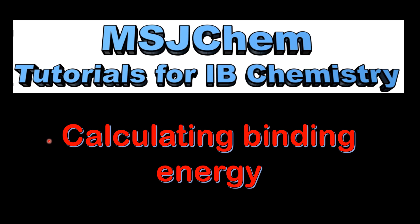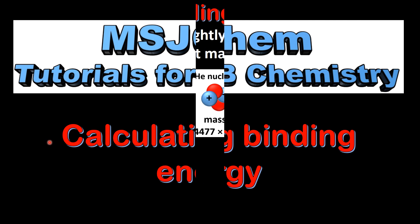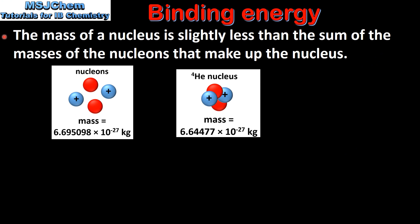This is MSJChem. In this video I'll be looking at calculating binding energy. In the previous video we saw that the mass of a nucleus is slightly less than the sum of the masses of the nucleons that make up the nucleus, which is known as the mass defect.